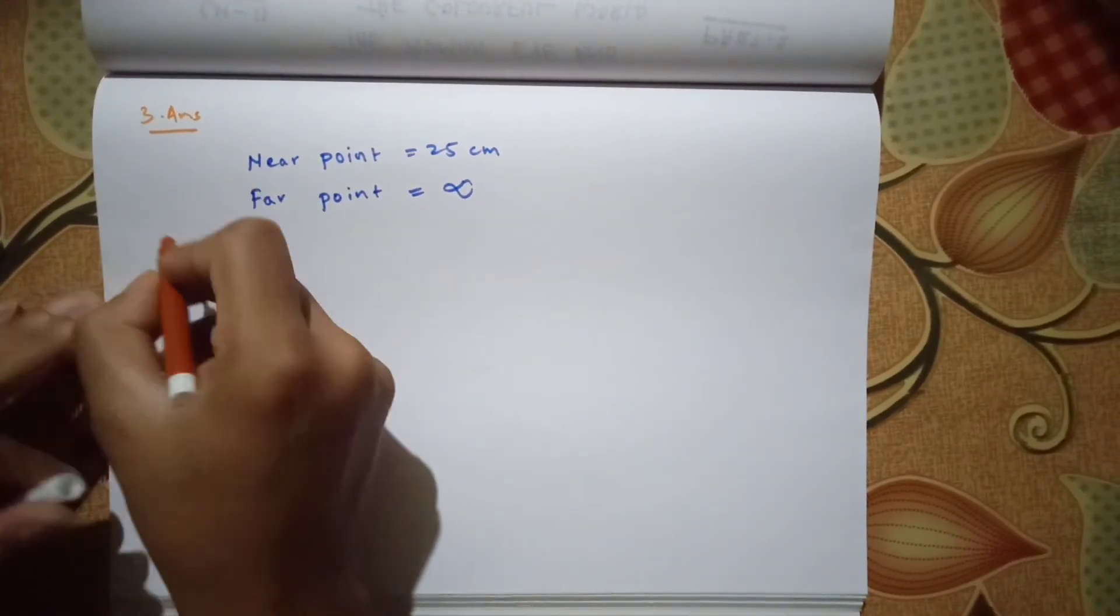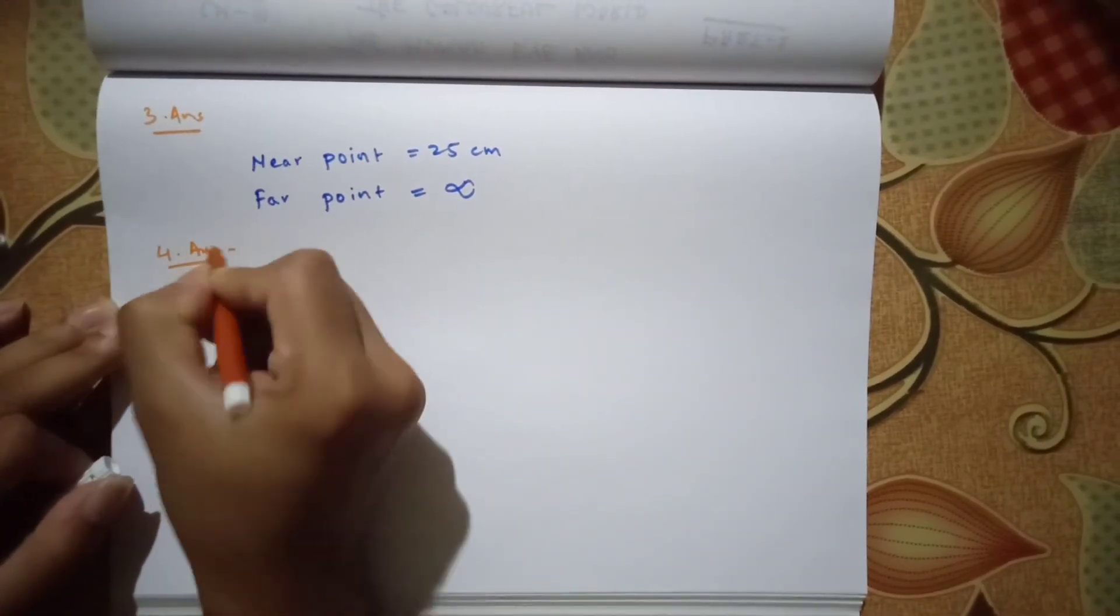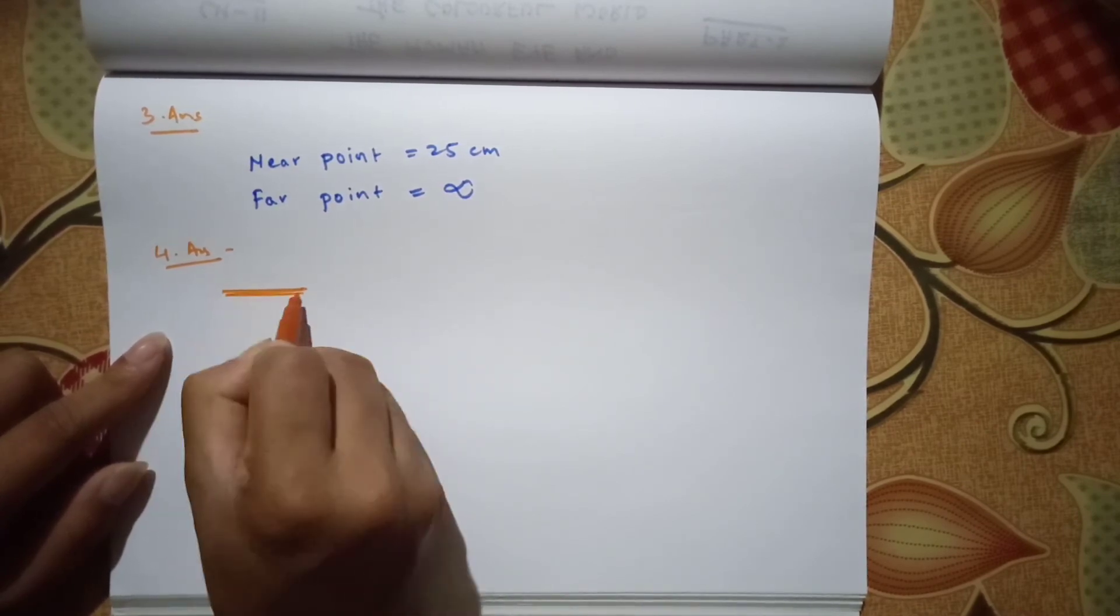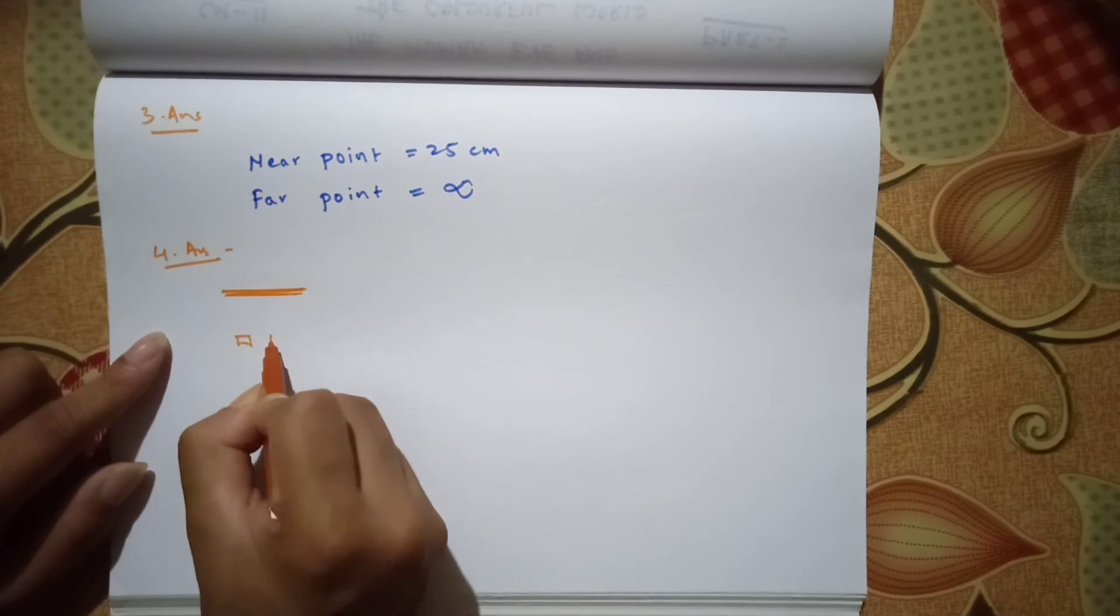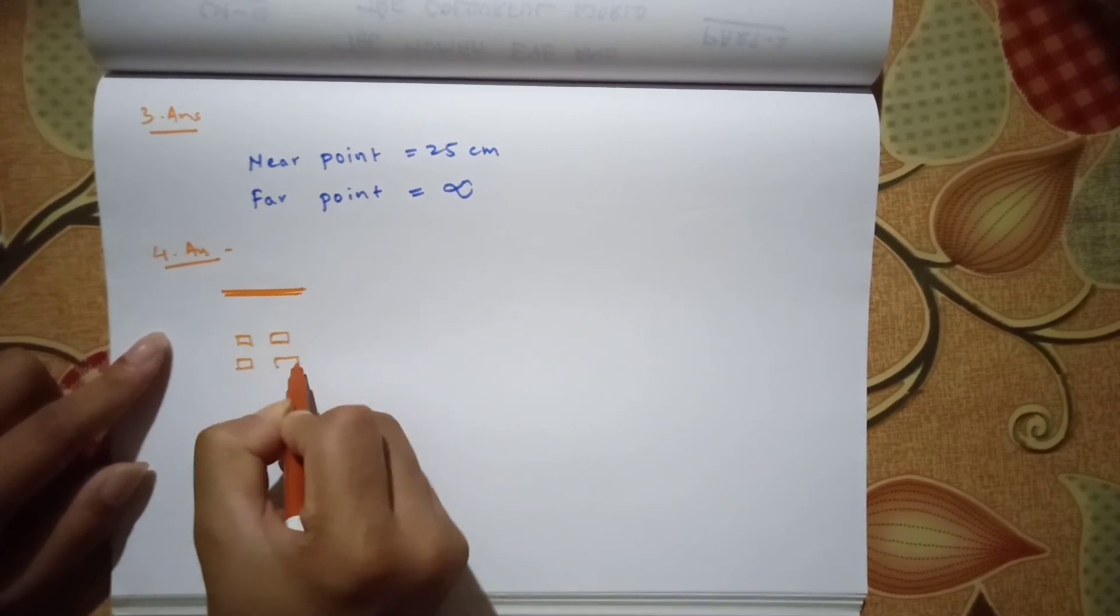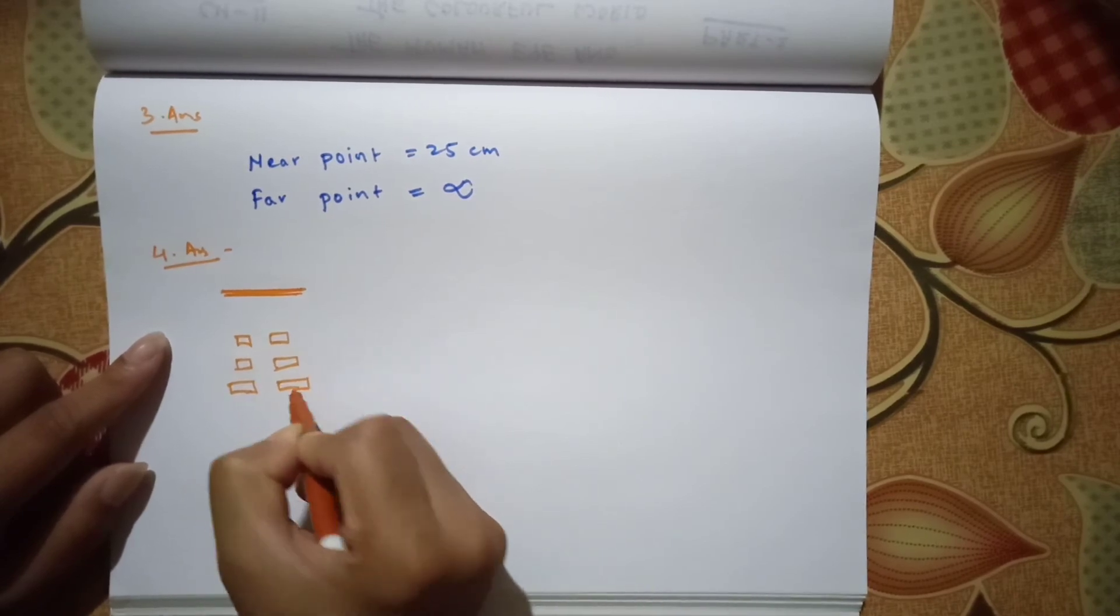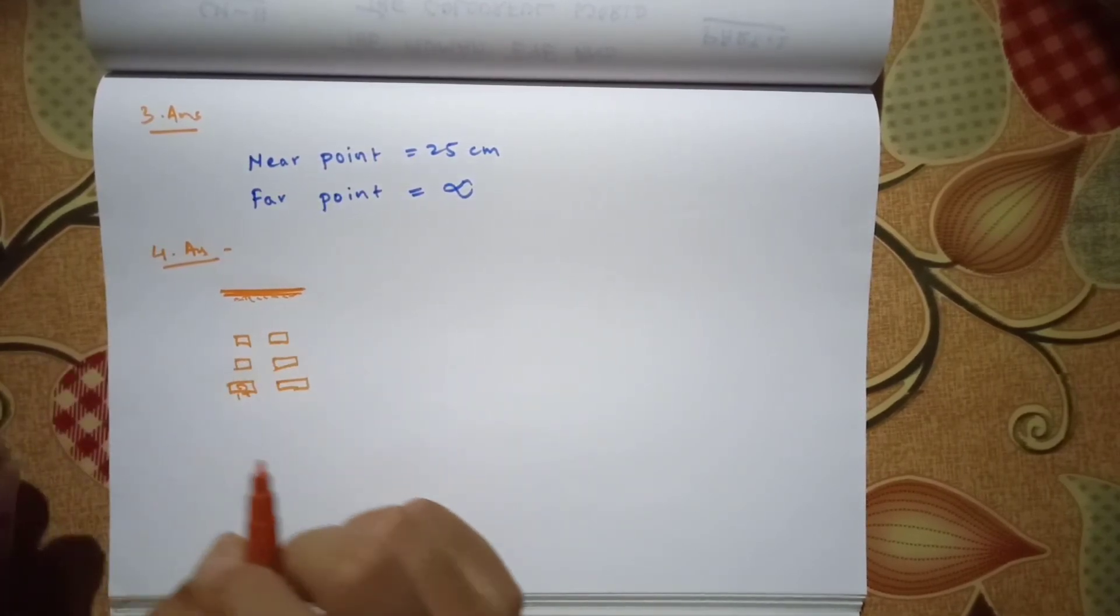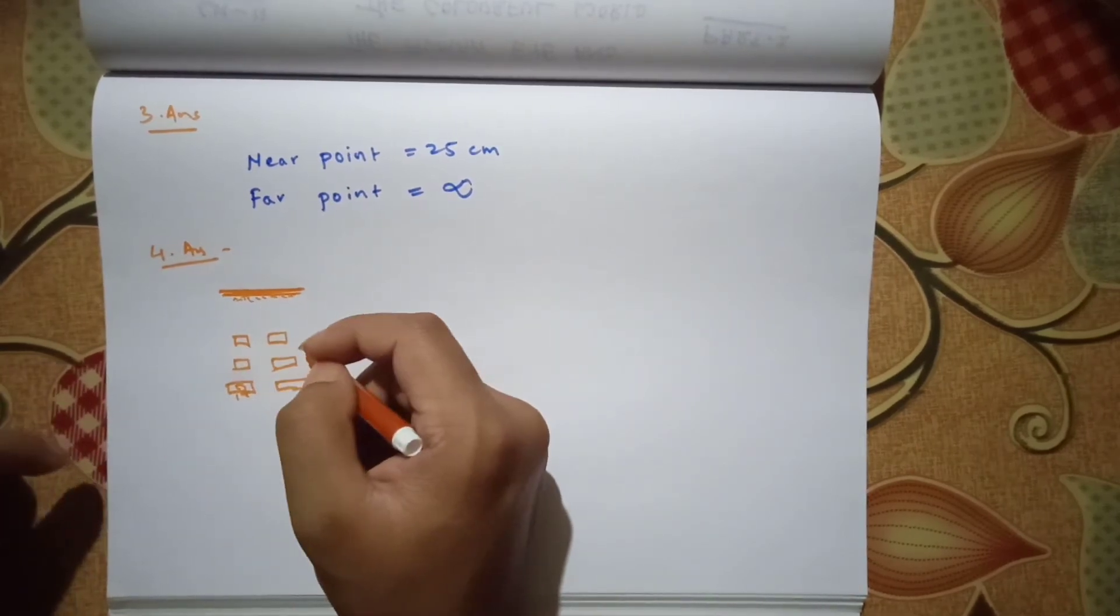Moving on to the next question, which is number 4. Here it is asked that a student has difficulty reading the blackboard while sitting in the last row. What could be the defect the child is suffering from? How could it be corrected? Let us take this as a blackboard, and the students are sitting. Let us take this as the last row. The student is sitting here and is not able to view what is written on the blackboard.